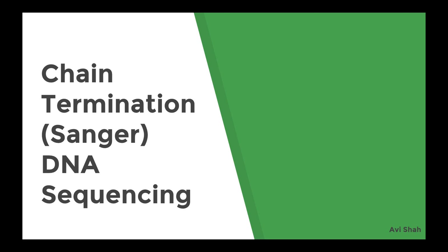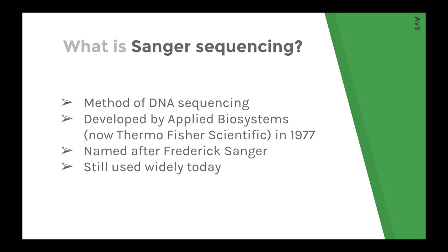Hello everyone, in this video I'm going to be going over Chain Termination or Sanger DNA Sequencing. What is Sanger Sequencing? It's a method of DNA sequencing developed by Applied Biosystems in 1977, named after the scientist who developed it, Frederick Sanger. It's still used widely today, even though we have next-gen sequencing methods at our disposal.